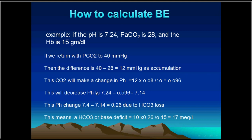This is very important, especially when calculating how much base deficit exists in order to give the patient bicarbonate. We should understand what we are dealing with: how severe the acidosis, how severe the alkalosis. The base excess or deficit gives you a quantity — how much bicarbonate is lost or how much bicarbonate is in excess in the case of alkalosis — and this gives you the value of the problem.